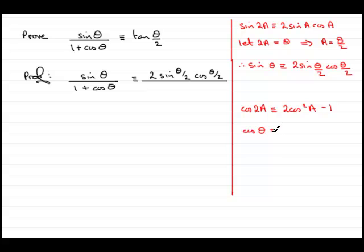is identical to 2 cos squared a, a being half theta, minus the 1 here. And it's this that we're going to use in the denominator. So we've got 1 plus cos theta,